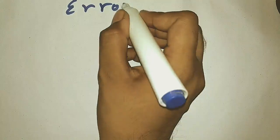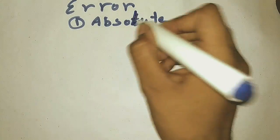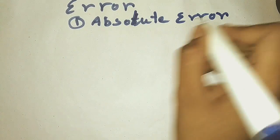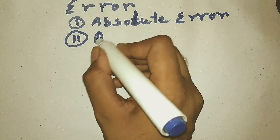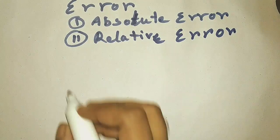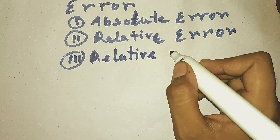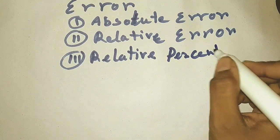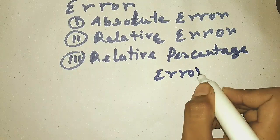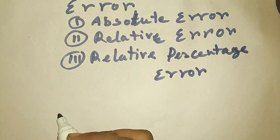Now we are going to learn about errors. There are three kinds of errors. The first one is called the absolute error, the second one is called the relative error, and the third one is called the relative percentage error. Now, what is the absolute error? Absolute error is the difference between the exact number and the approximate number.